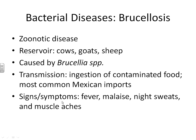The next disease to discuss is also a zoonotic disease called brucellosis. Brucellosis is found in nature in cows, goats, and sheep — many of your different farm animals. It is caused by the bacteria Brucella with various species. You can get this disease by ingesting contaminated food. Most of the time, these contaminated foods are found as imports from Mexico. This is one of the main reasons we have had to develop much more strict guidelines on our food imports.